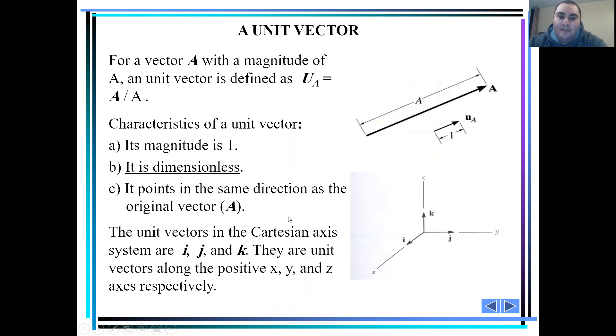As you know, the unit vectors in the Cartesian axis system are i, j and k. They are the unit vectors along the positive x, y and z axes respectively.